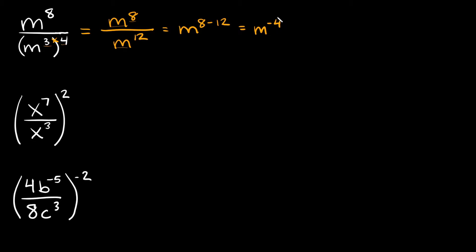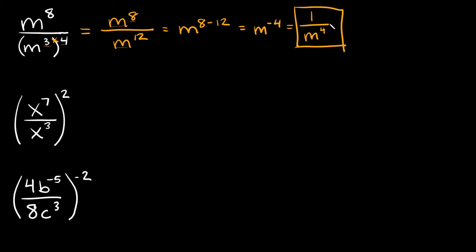How do you deal with a negative exponent? All you have to do is write it as a fraction under 1. Put a 1 on top, and the term goes on the bottom — the only difference is the exponent becomes positive. So m to the negative fourth equals 1 over m to the positive fourth, and that's as simplified as you can get.